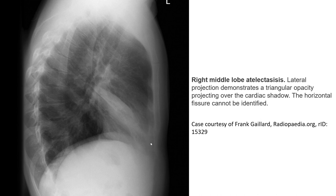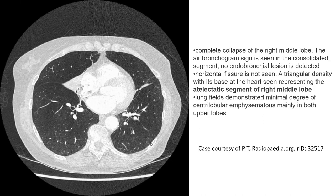A triangular opacity projecting over the cardiac shadow — the crystal fissure here cannot be identified. This finding should represent right middle lobe atelectasis. CT confirmed complete collapse of the right middle lobe. The air bronchogram sign is seen in the consolidated segment. No endobronchial lesion is detected and the horizontal fissure is not seen.